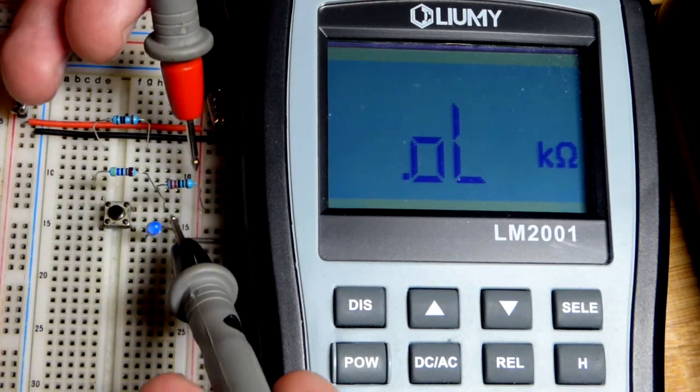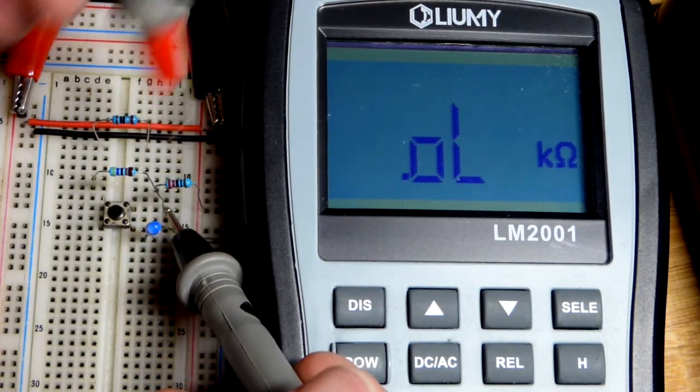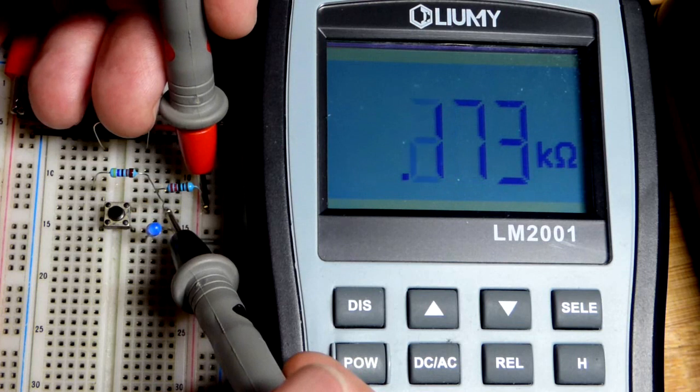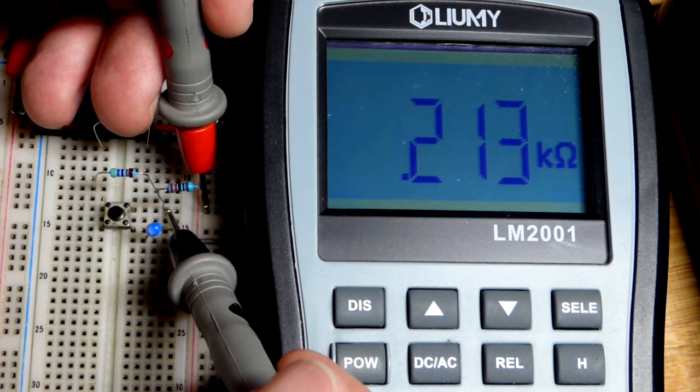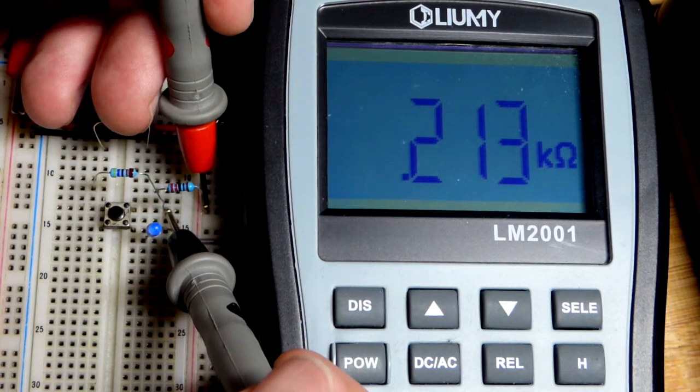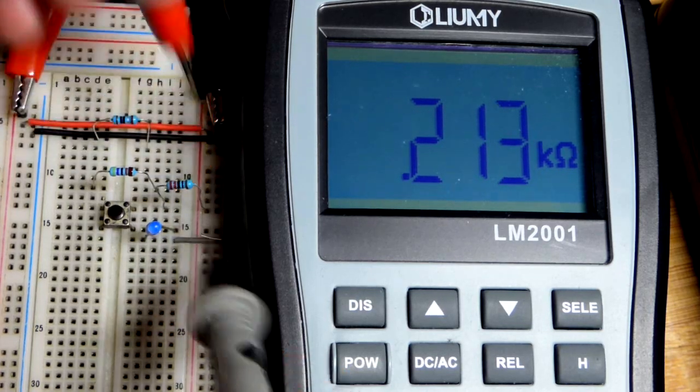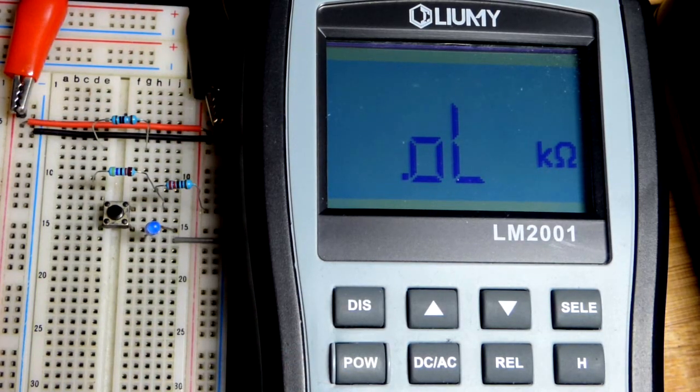This meter has some unusual ranges of resistance. Now I'm not pressing the button, so we can take a measurement. It reads 220 ohms, or 0.213 kiloohms, which is the same as 213 ohms - pretty much what we got with the other meter.